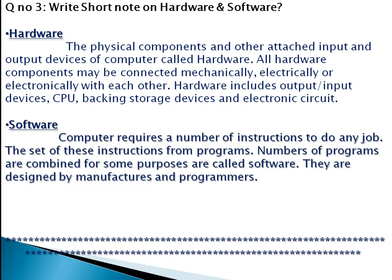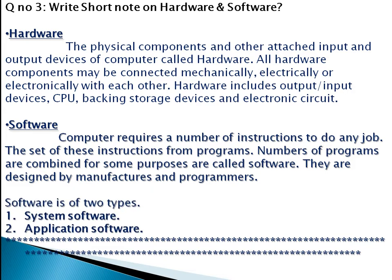What are the softwares? A computer requires a number of instructions to do any job. The set of these instructions form programs, and a number of programs combined for some purpose are called software. They are designed by manufacturers and programmers. Software is of two types: number one, system software; number two, application software.